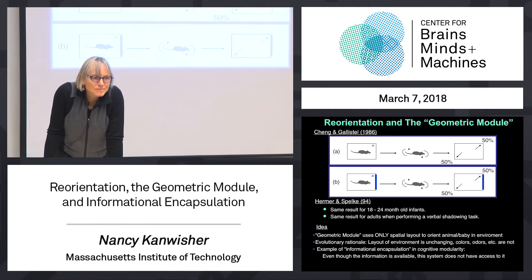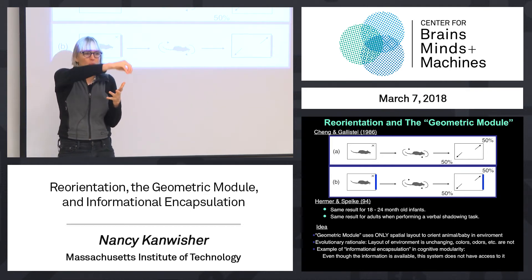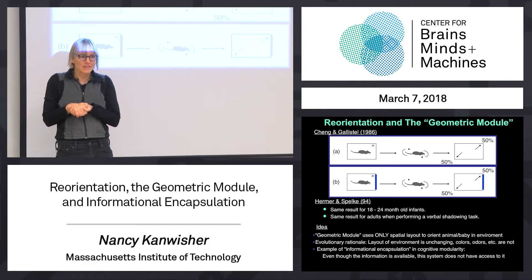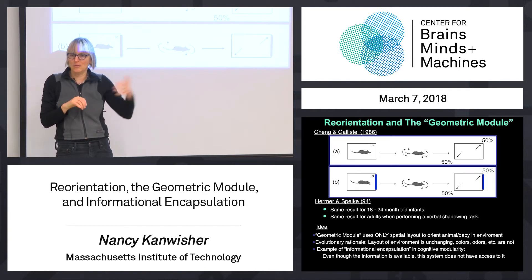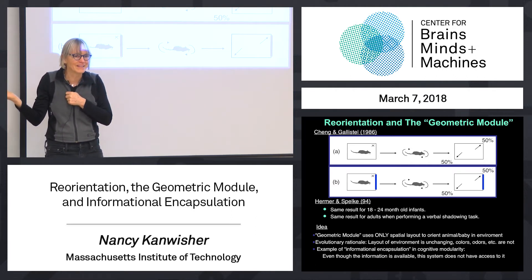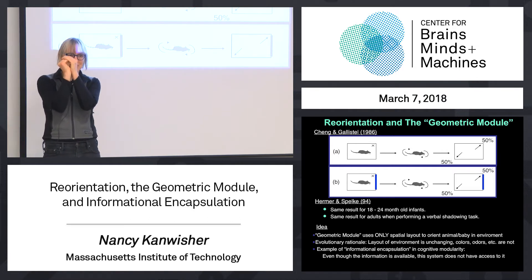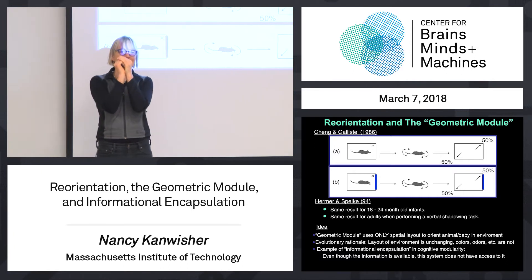Why wouldn't the mouse use other features? That's the idea of informational encapsulation — there are constraints on what information can get where in the brain. This rodent is not stupid; he's using lots of cues. But he's not able to use this other information for reorienting, because reorienting is a specific problem solved by a specific module, and that module does not have access to other information.